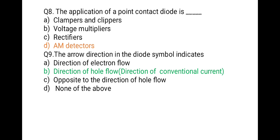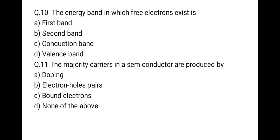The next question is: the energy band in which free electrons exist is — option one: first band; option two: second band; option three: conduction band; option four: valence band. The correct option is conduction band, because free electrons exist in the conduction band.